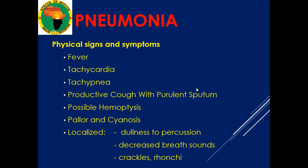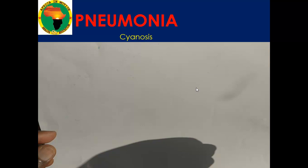In addition to history, you will see physical signs and symptoms which include fever, tachycardia — the heartbeat is fast — tachypnea, a very fast respiration, and productive cough. The patient might cough out blood, which is called hemoptysis. The patient might be pale or cyanotic. There may be localized dullness on percussion, decreased breath sounds on auscultation, and the doctor might also hear abnormal sounds such as crackles or rhonchi.